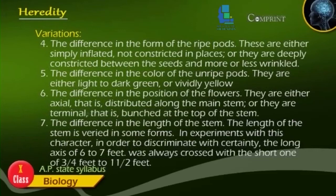4. The difference in the form of the ripe pods — these are either simply inflated, not constricted in places, or they are deeply constricted between the seeds and more or less wrinkled. 5. The difference in the color of the unripe parts — they are either light to dark green or vividly yellow. 6. The difference in the position of the flowers — they are either axial, distributed along the main stem, or terminal, bunched at the top of the stem. 7. The difference in the length of the stem — the long axis of 6 to 7 feet was crossed with the short one of 3 to 4 feet.